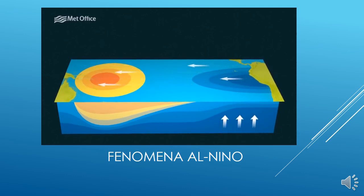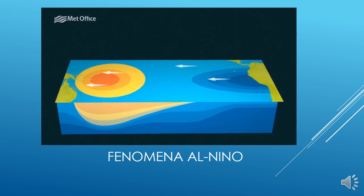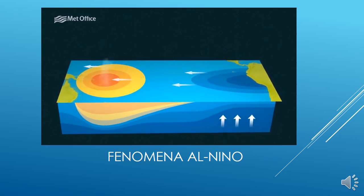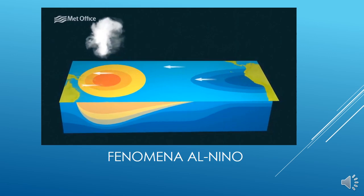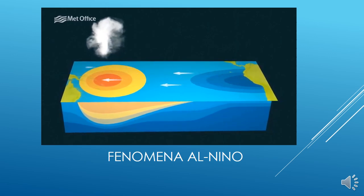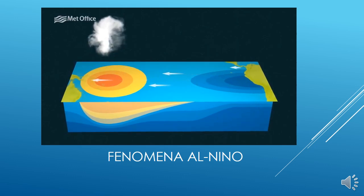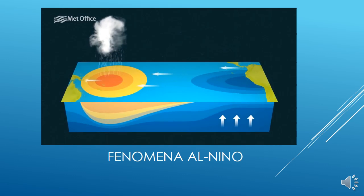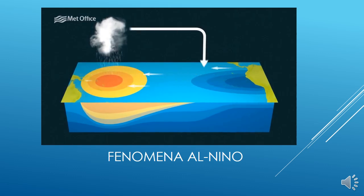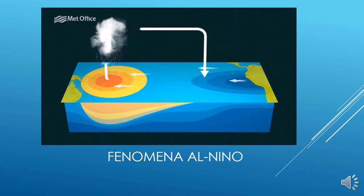Warmer water adds extra heat to the air, which causes the air to rise with more vigour, and it's this rising air that creates an area of more unsettled weather, with more cloud and rainfall. That rising air in the west sets up atmospheric circulation across this part of the world, with warm moist air rising on one side of the ocean and cooler, drier air descending on the other. This circulation reinforces the easterly winds.